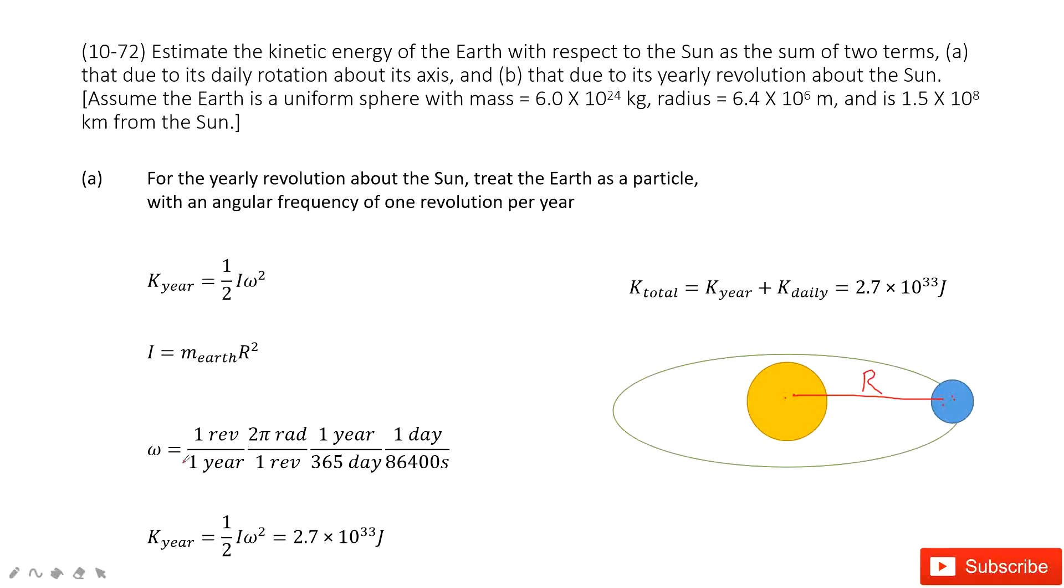And now the revolution. Now the angular velocity changes. It becomes one revolution per year. We still need to convert the unit to radians per second.